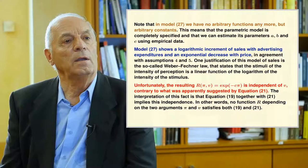Unfortunately, the resulting R function is independent of V, contrary to what was apparently suggested by equation 21. The interpretation is that equation 19, together with 21, implies this independence — no function R depending on both Pi and V can satisfy both 19 and 21.